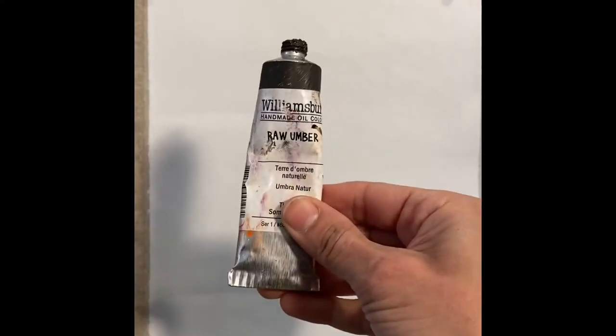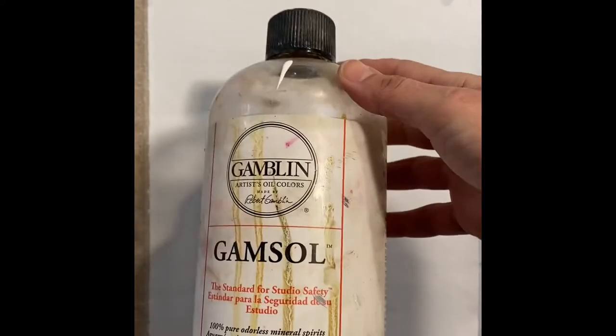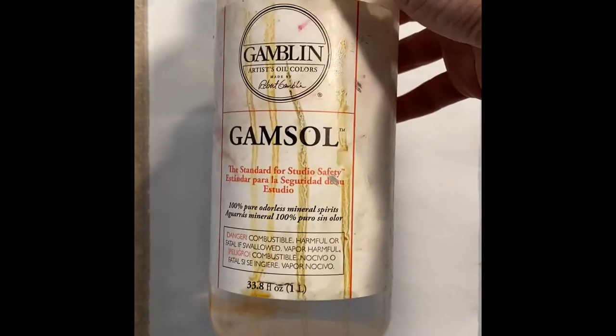First I'm going to talk about the materials that you're going to need to tone your canvas with oil. The materials you need are a little bit of raw umber, odorless mineral spirit or mineral spirits. I use Gamsol made by Gamblin.